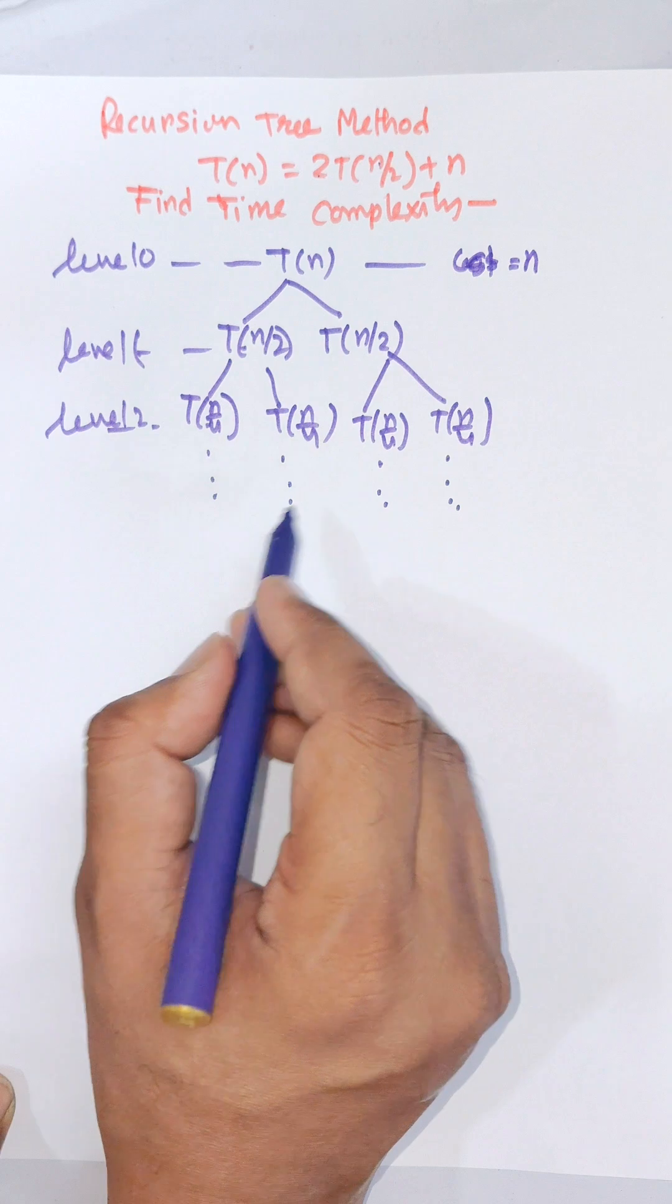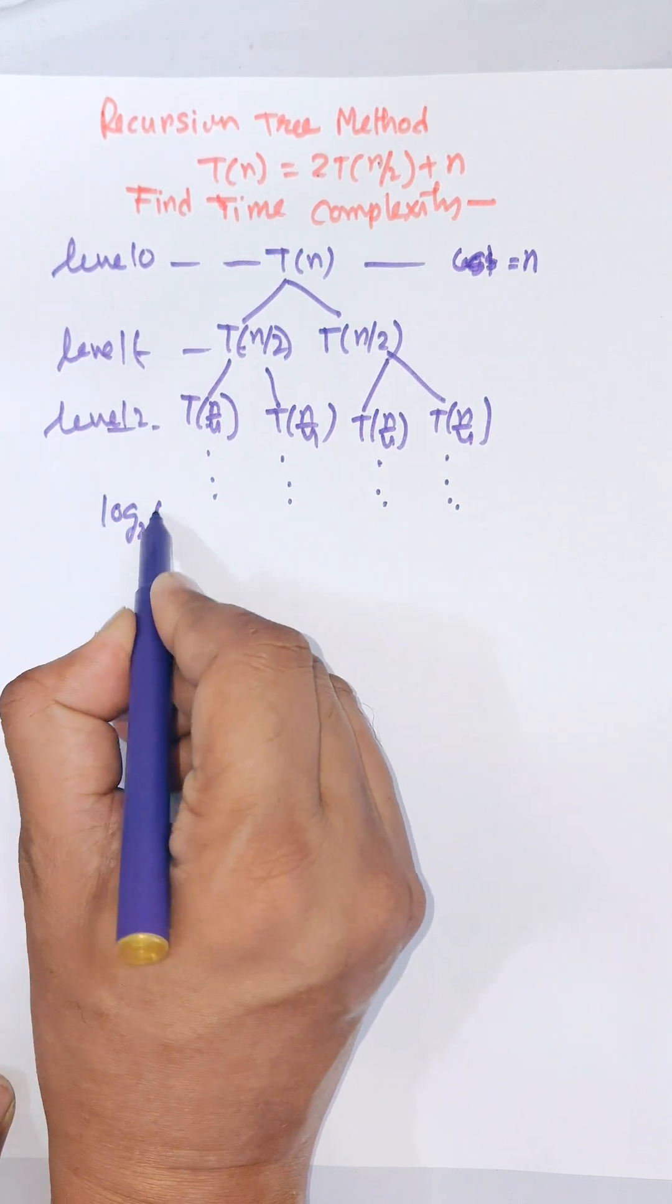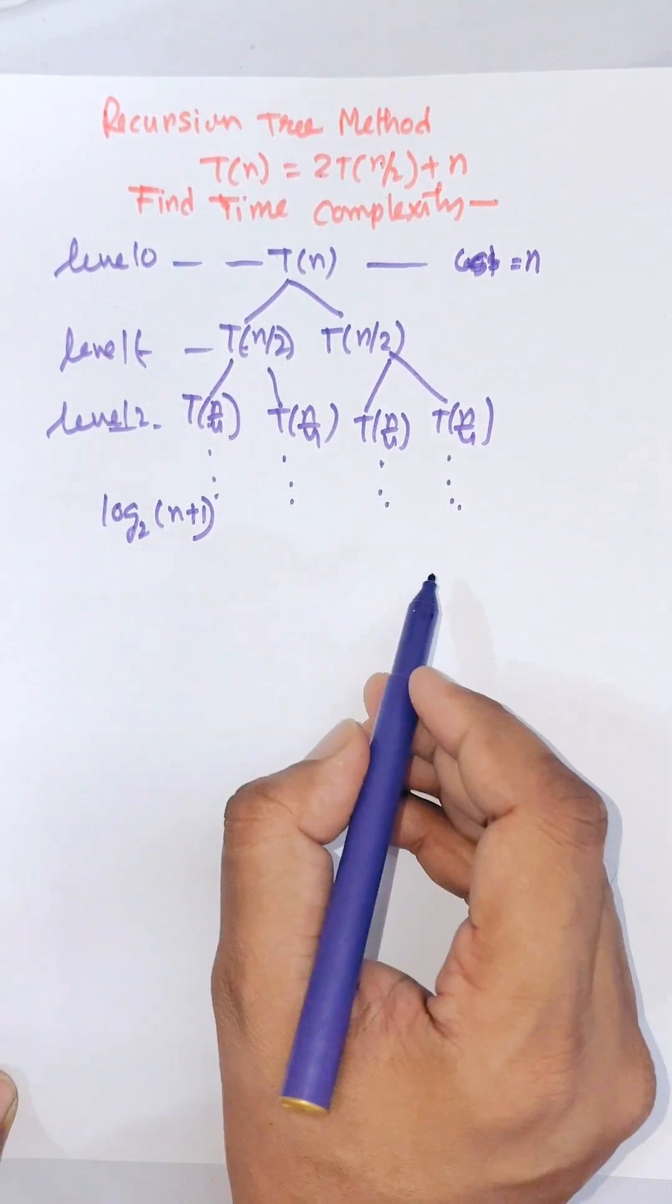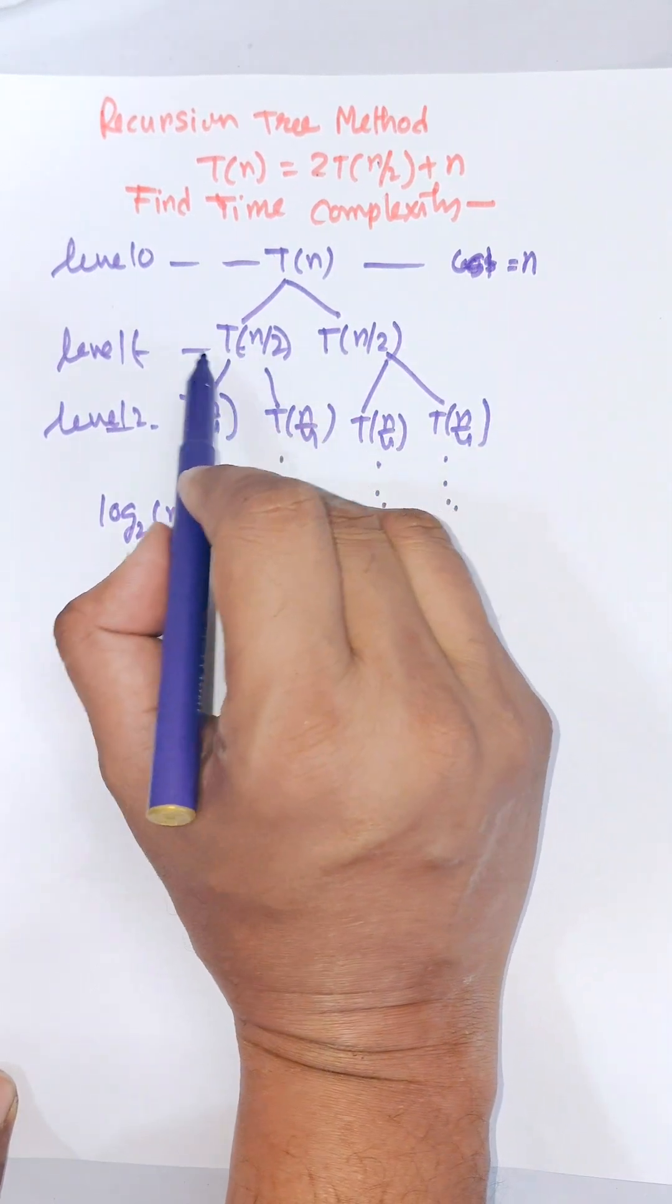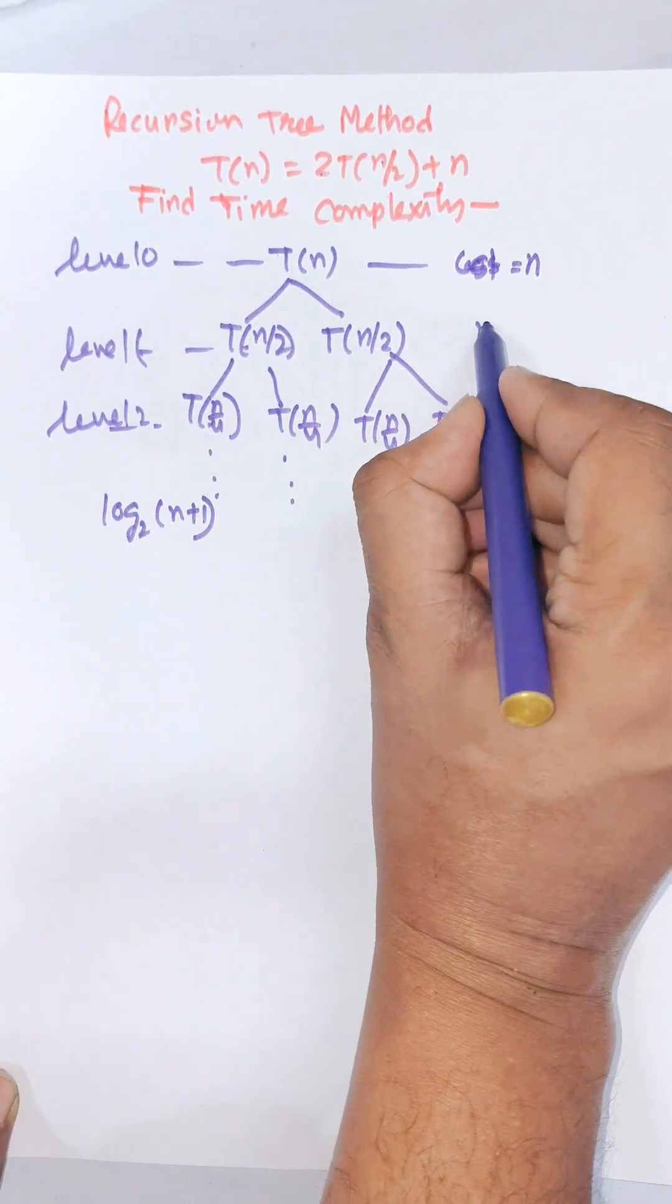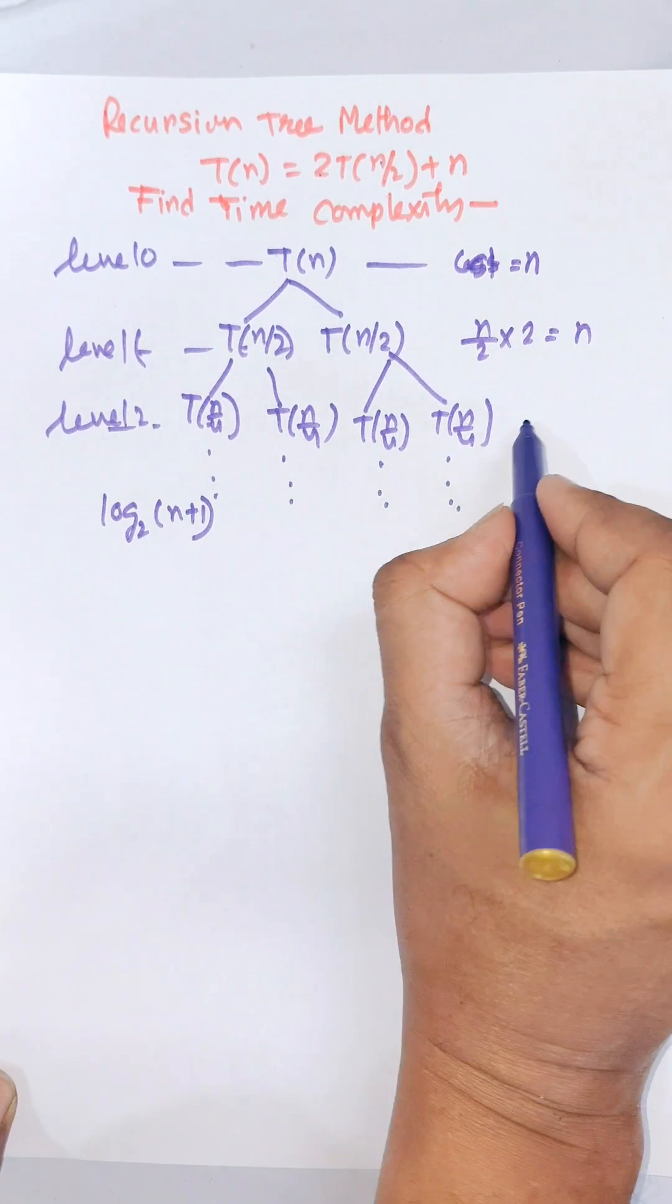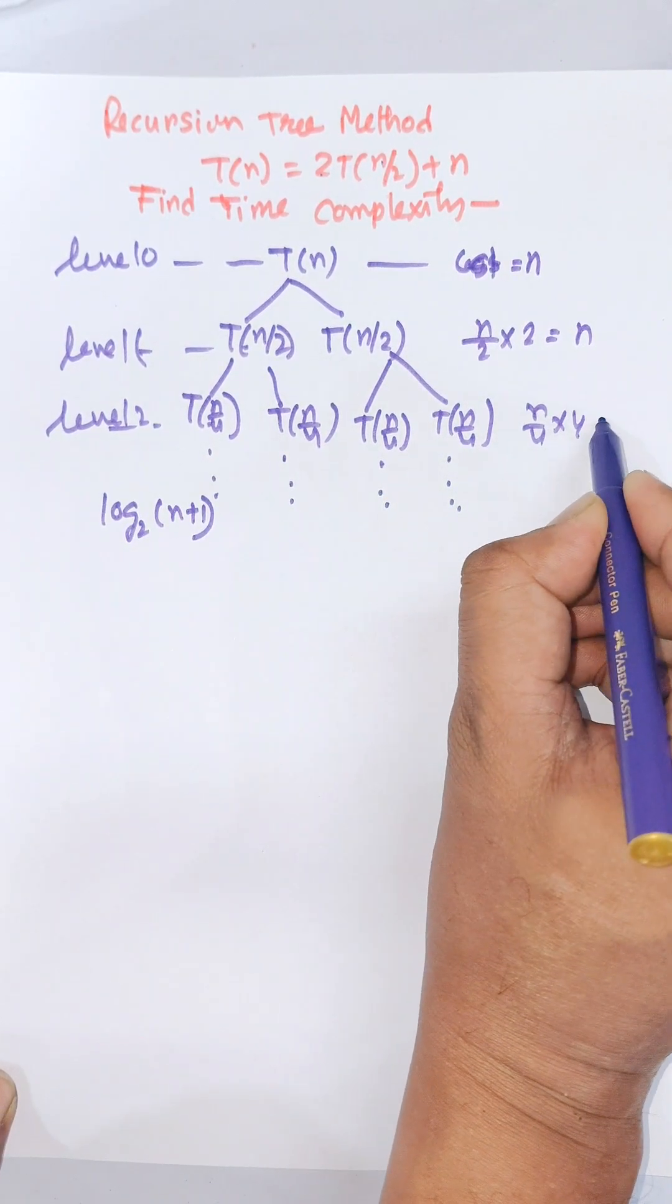We know that maximum level is log₂(n) plus 1 and here cost of root is n and the cost of level 1 is n/2 by 2 into 2 equal to n and cost of this n/4 into 4 equal to n.